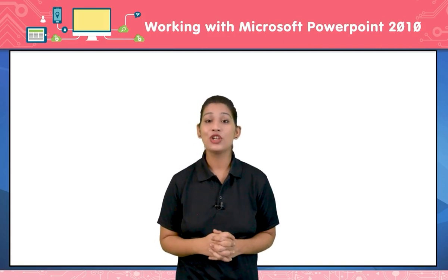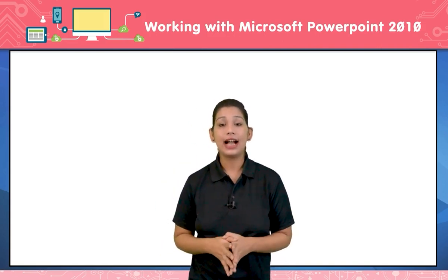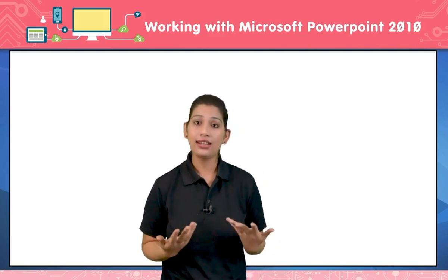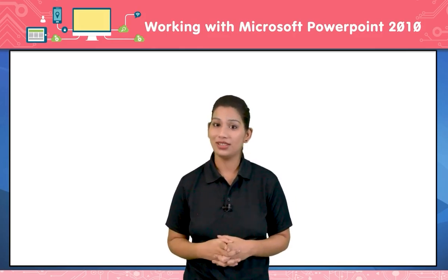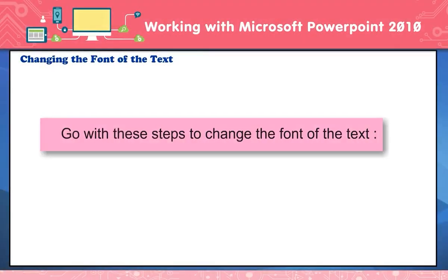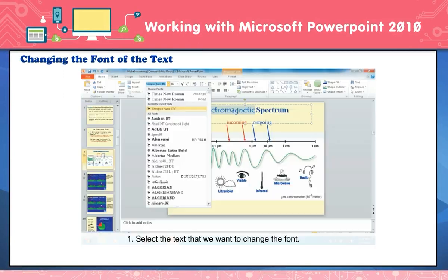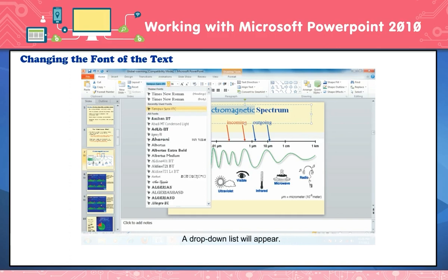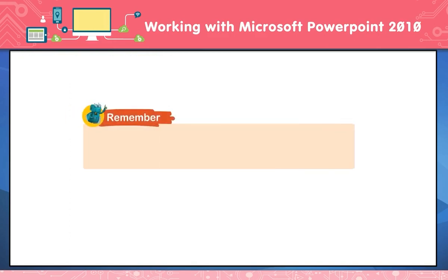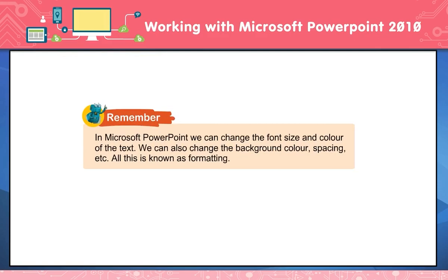This will help you make your presentation more interesting and creative. Now let us understand how to change the font, background, and other things to make your presentation more polished. To change the font of the text: select the text whose font you want to change. Click on the Home tab. Click on the down arrow of the Font button. A drop-down list will appear. Click on the font you want to apply. In Microsoft PowerPoint, we can change the font size and color of the text. We can also change the background color, spacing, etc. All of this is known as formatting.